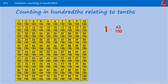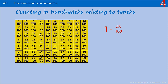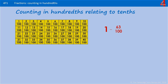Have a go at doing that calculation: one take away 63 hundredths. And if you're feeling really brave, have a go at breaking the 63 hundredths down into tenths and hundredths — pause the video and have a go. We're going to take away 63 hundredths: that's 10, 20, 30, 40, 50, 60 — we've taken away 60 hundredths.